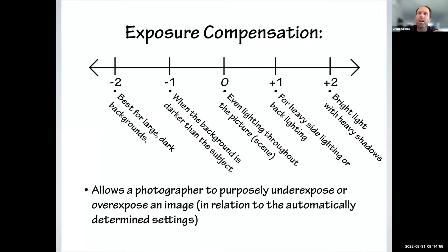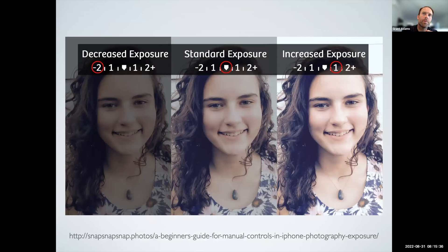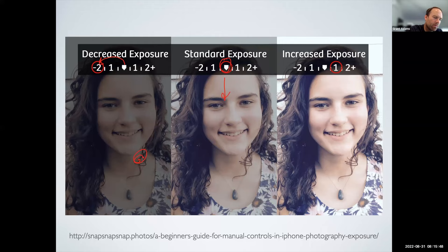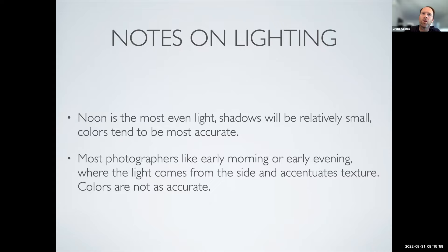Exposure compensation is something we might actually use. When you look at your phone and the picture doesn't quite look right — maybe it needs to be a little brighter or a little darker — that's where exposure compensation comes in. On your phone, you touch the screen and drag up to deliberately lighten or drag down to deliberately darken the image. The center is what the camera thinks is correct. You have this control even on your phone.